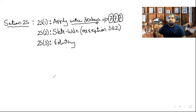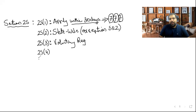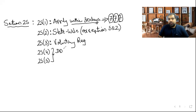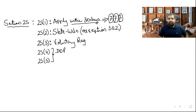Section 25(3): Voluntary registration — you haven't crossed the threshold and aren't compulsorily required, but you can still register voluntarily, mainly to claim ITC. Sections 25(4) and 25(5): If you're registered in Maharashtra and Gujarat, those two entities are called deemed distinct persons — separate entities even under the same PAN.